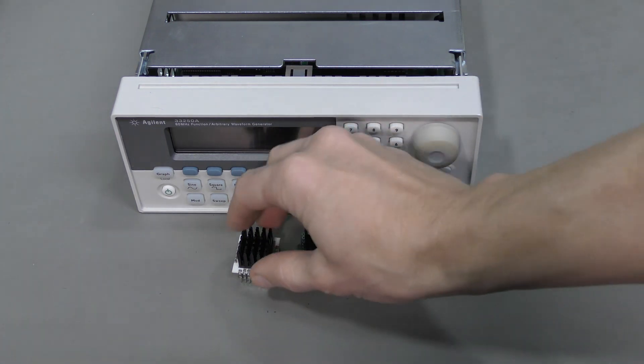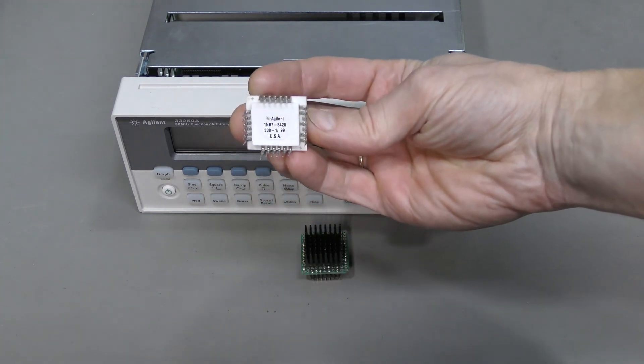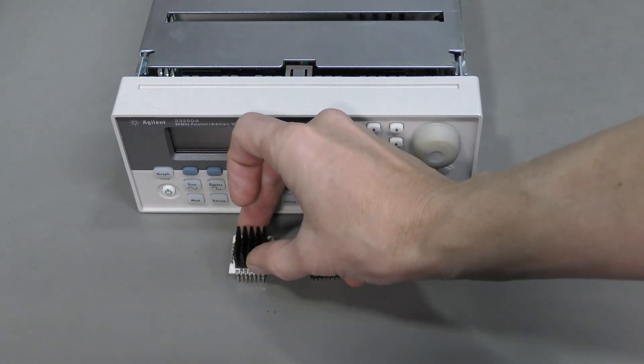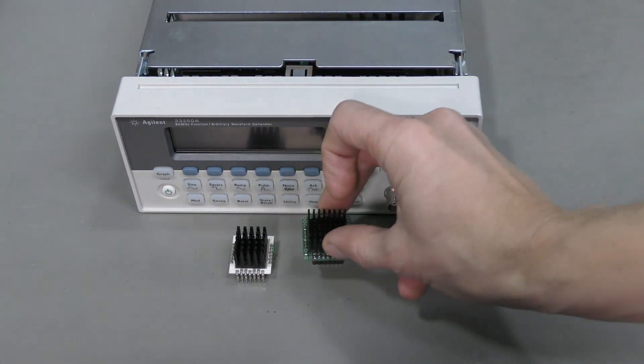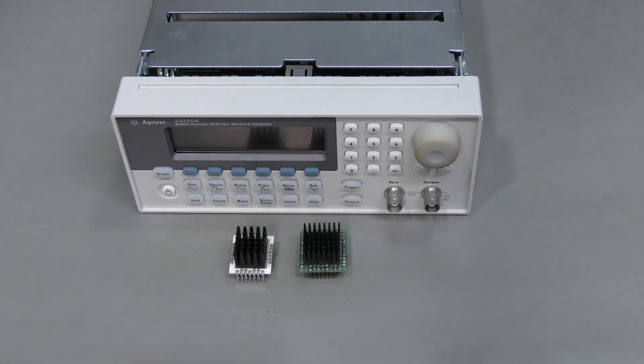This is the original Agilent hybrid amplifier. And this is my prototype. Almost working, but not quite. There is some instability at the very top of the range, at 80 MHz and maximum amplitude of 10V peak-to-peak. With a slightly lower amplitude or frequency it seems to work fine. Let's see if we can improve this.